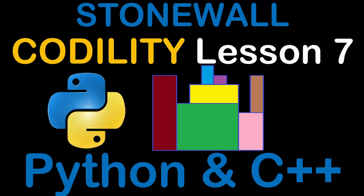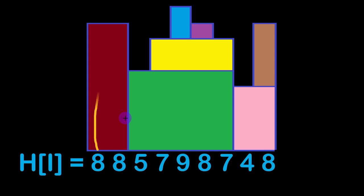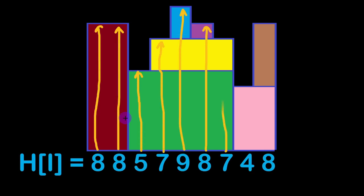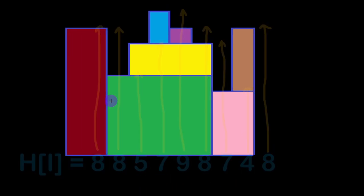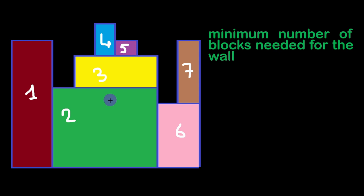Hello everyone and welcome. In this video we are going to solve the Stone Wall exercise of Codility lesson number 7. We are given an array of numbers representing the height or level of each part of the wall, starting from position 0 up to position n minus 1. In this example we have n equal to 9, and we need to find the minimum number of stones to build such a wall — in this case, 7.